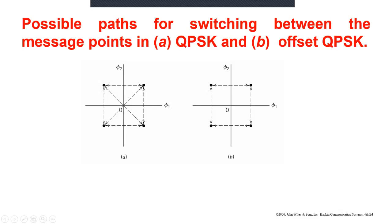If we consider the signal space diagram of QPSK, there are four message points: 1,1; 0,1; 0,0; and 1,0. The arrows shown represent the switching of the information bit from 1,1 to 0,1, or 0,1 to 0,0, or 0,0 to 1,0, or 1,0 to 1,1. When it switches between these adjacent states, the change in phase shift is 90 degrees. Here, all possible values of change in phase shift are shown.